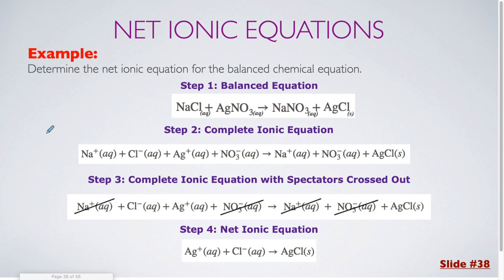Here's another example that is completed from start to finish. We're starting off with a balanced equation — these could all have coefficients of one because this is already balanced. We have three aqueous compounds here and one of them is a solid. For the complete ionic equation, those three compounds are all broken up into their aqueous versions, but the silver chloride is staying together as a solid. We cross out each of the ones that were aqueous on both sides. Notice only the Ag and Cl are left alone in the end, and that is what comes down to our net ionic equation.